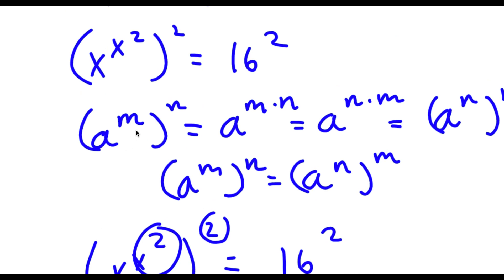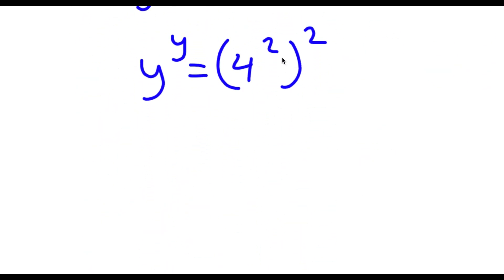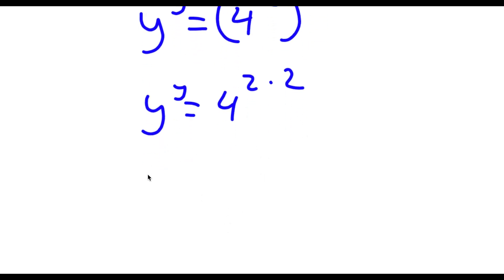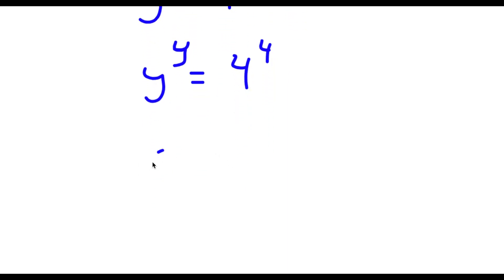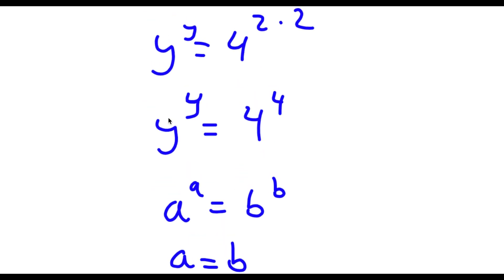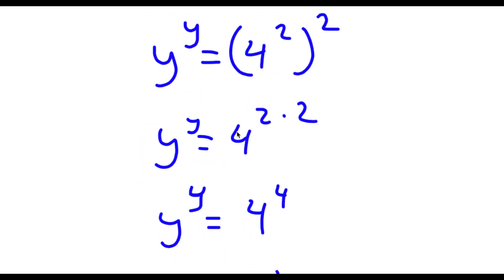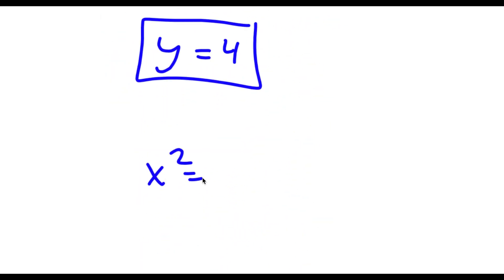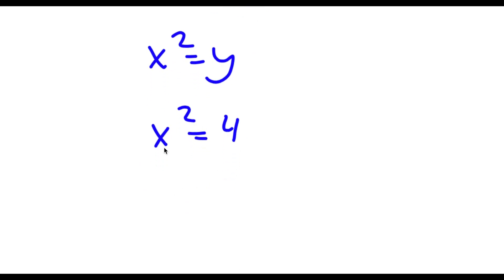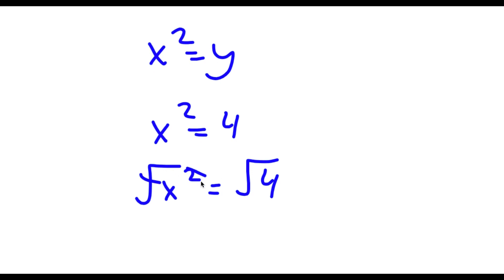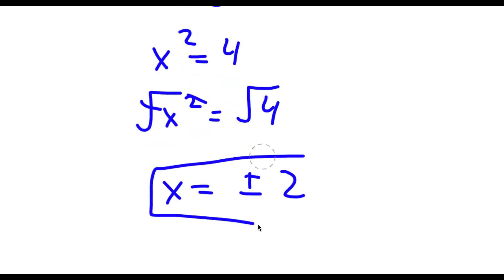Remember, a to the power of m to the power of n equals a to the power of m times n. So 4 to the power of 2 to the power of 2 equals 4 to the power of 2 times 2, and 2 times 2 is 4, so I have y to the power of y equals 4 to the power of 4. Now if a to the power of a equals b to the power of b, then a equals b, so y equals 4. But we're solving for x, so since x squared equals y and y equals 4, x squared equals 4. Taking the square root on both sides, x is equal to positive or negative 2. This is my answer.